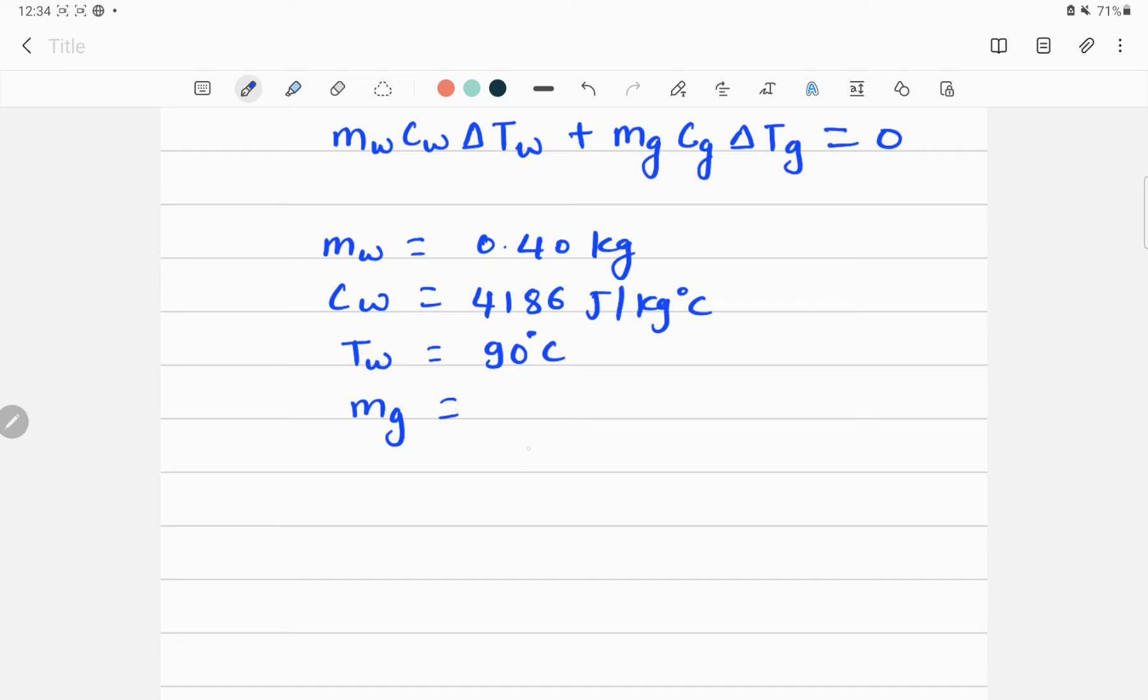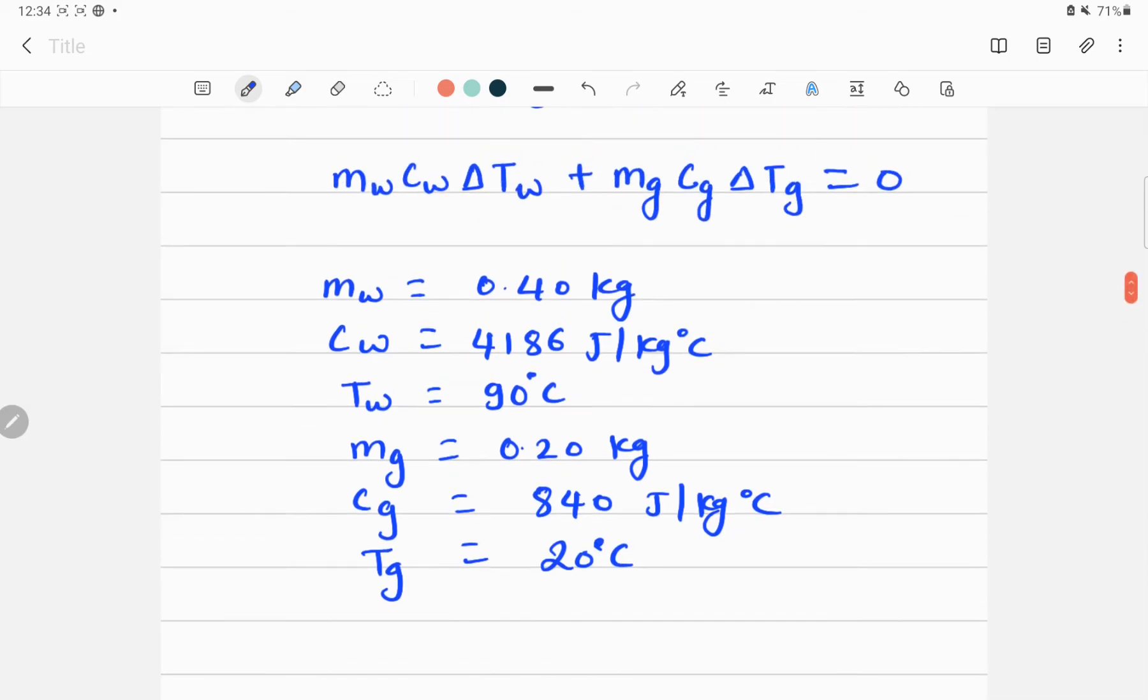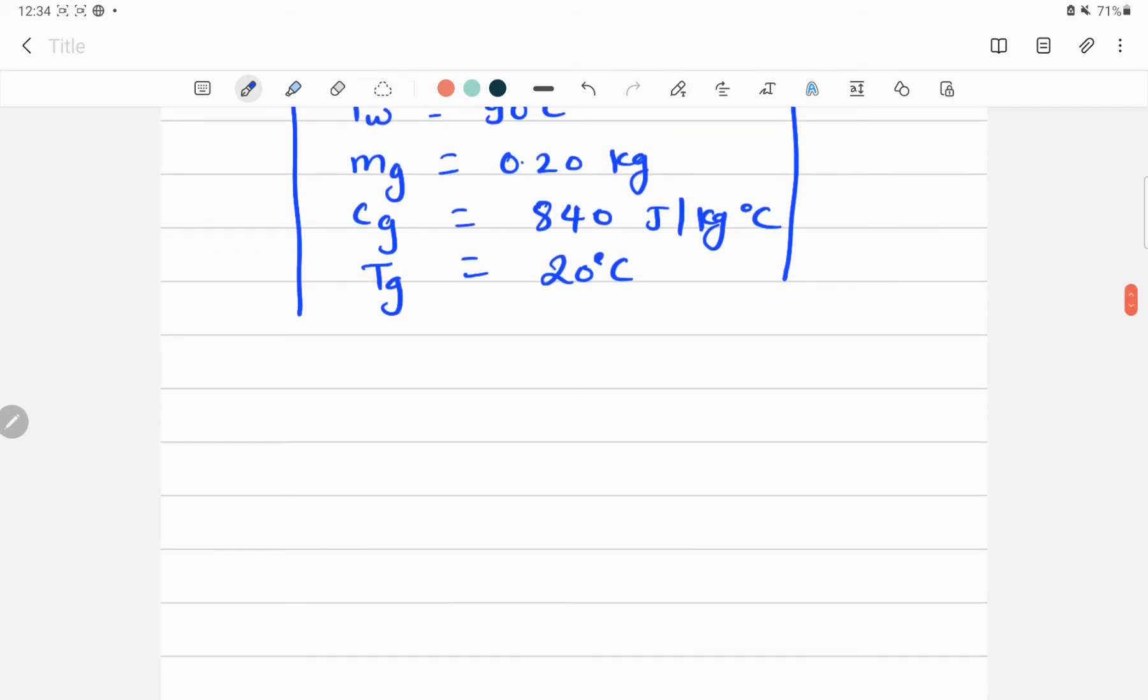Also mass of the glass is given which is 0.20 kilogram, and specific heat capacity of glass is 820, we can get it from the table for specific heat capacity, and the temperature of glass is equal to 20 degrees Celsius. So these are all the data we have.